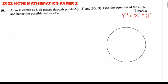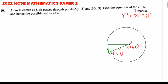Let's say I have a circle. The center of the circle is at C(5,5). We want to find the radius. Let's assume point A has coordinates (1,3). We can draw a right-angle triangle. From 5 to 1 is 4 units, and from 5 to 3 is 2 units.